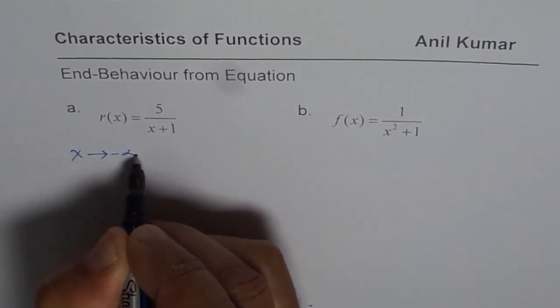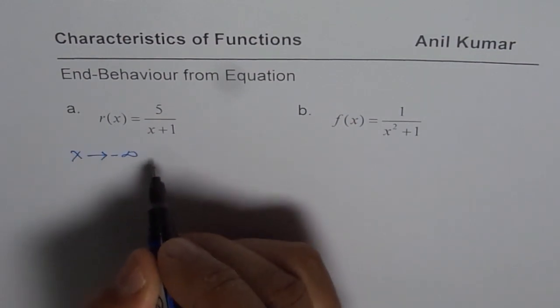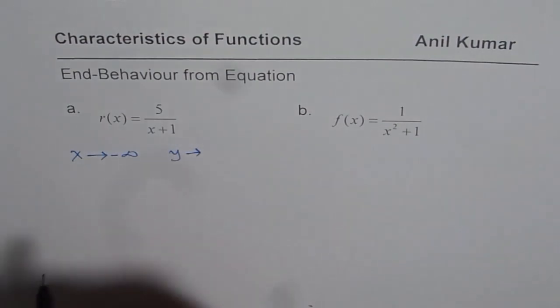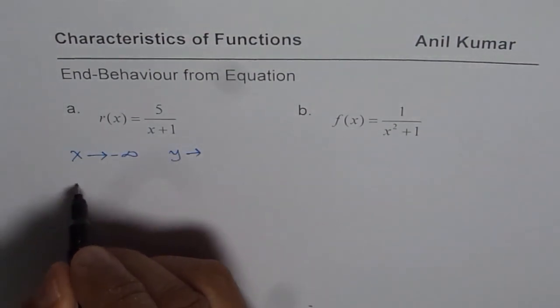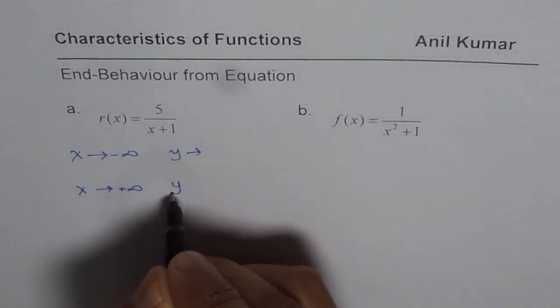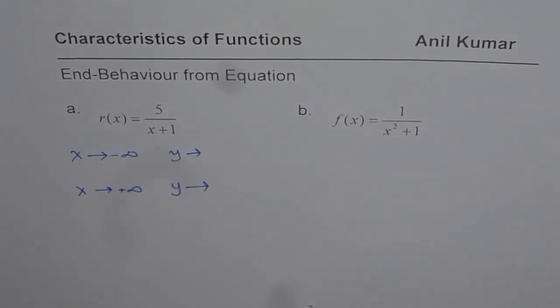x approaches negative infinity. That means it is approaching a very large negative value. What happens to y? What y approaches? That is what we are trying to figure out. And what happens when x approaches positive infinity? In that case, what value does y approach? So this is what we are trying to figure out for the given equations.